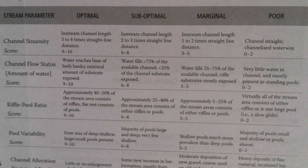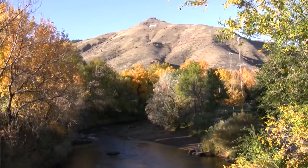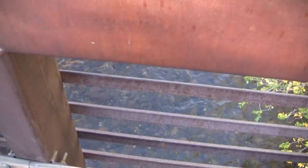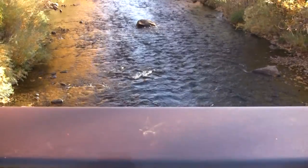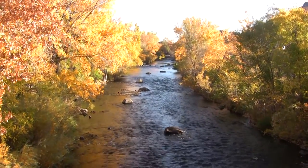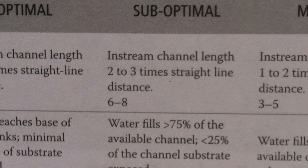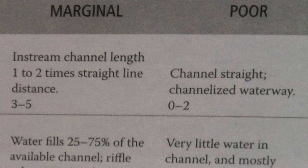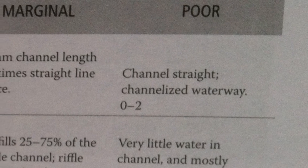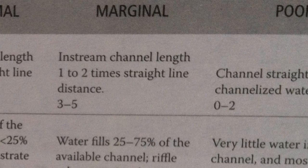The first parameter is channel sinuosity, or the bendiness of the stream. Imagine a line that goes down the center of the stream as far as you can see, take that line and straighten it out, and determine how much longer it is than the point-to-point straight-line distance. Optimal is 3–4 times longer, suboptimal is 2–3 times longer, marginal is 1–2 times longer, and poor is a 1-to-1 straight line. For example, if you think our creek is in the marginal category, you can give a score of 3–5 out of 10, adjusting within that range based on whether sinuosity is closer to 2-to-1 or 1-to-1.